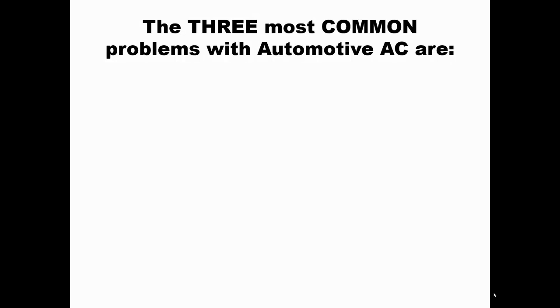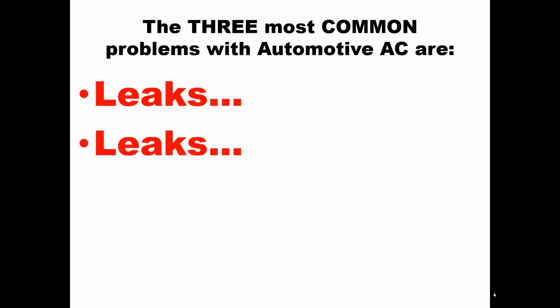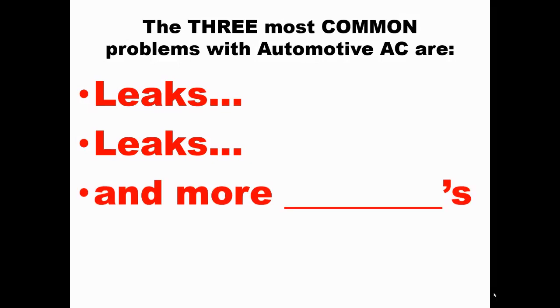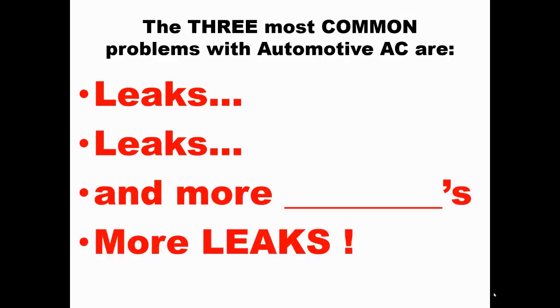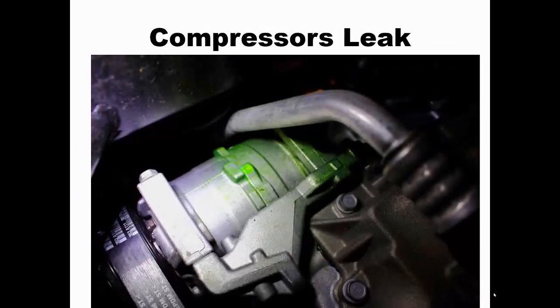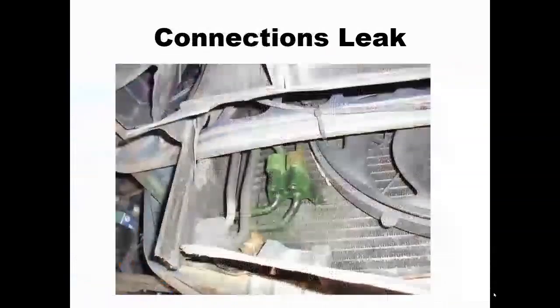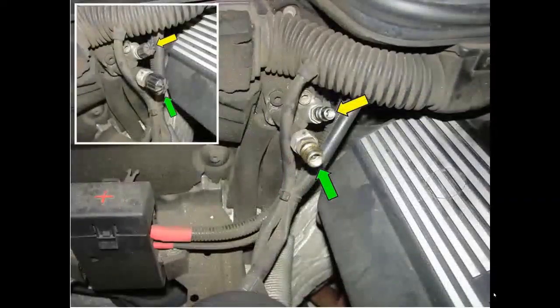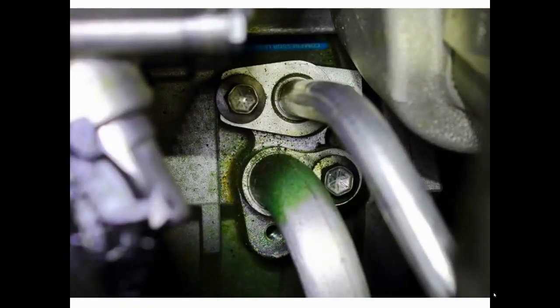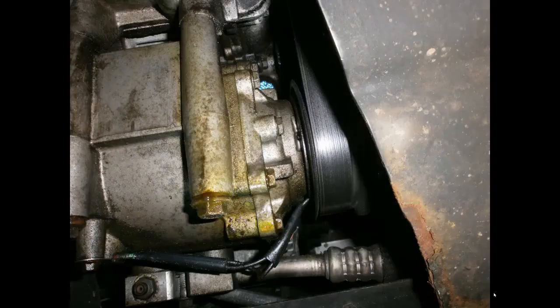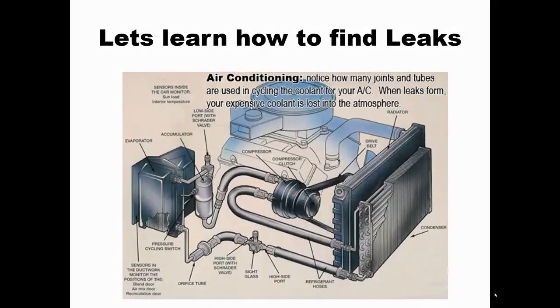There's no question about it. In my opinion, the three most common problems with automotive air conditioning are leaks, leaks, and more leaks. What leaks? Everything. Compressors leak, evaporators leak, condensers leak, connections leak, service fittings leak, gasket seals, o-rings leak. Everything leaks. So it's very important that we learn how to find leaks.